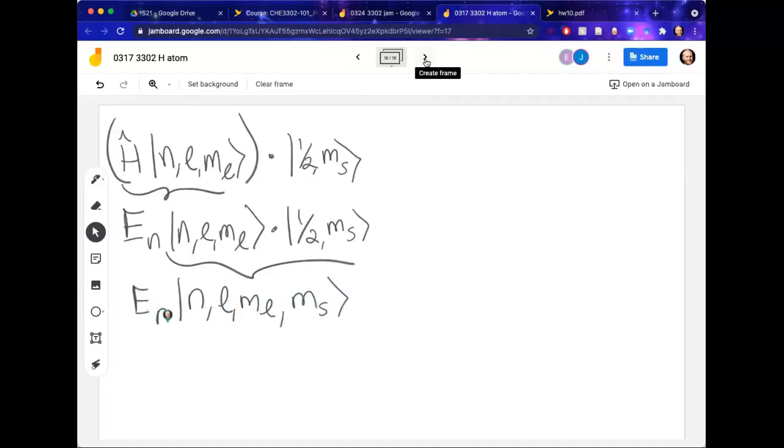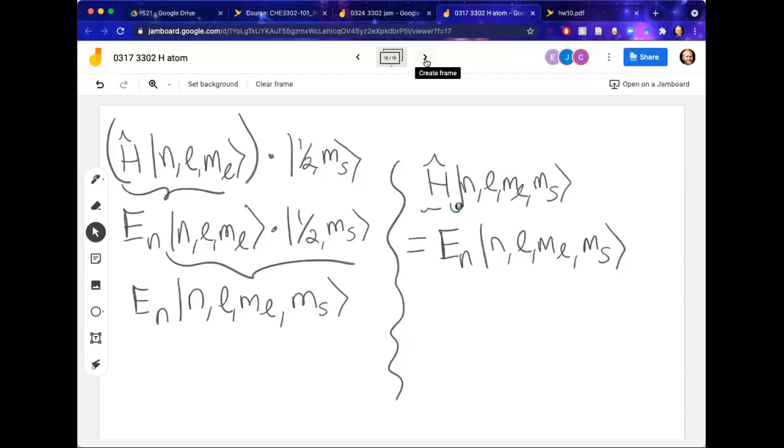So what we've just shown all in all is that when I have the Hamiltonian acting on the full hydrogenic wave function, it depends on all four quantum numbers, then it just gives me back the eigenvalue, the energy of this system, times the wave function. So the Hamiltonian acts on the spatial parts and gives me back the eigenvalue.